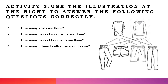Use the illustration at the right to answer the following questions. How many shirts are there? There are two shirts. How many pairs of shorts are there? There are two. How many pairs of pants are there? There are two also. How many different outfits can you choose? Since we have two shirts and four total clothing options, there are eight outfits, because two times four equals eight.